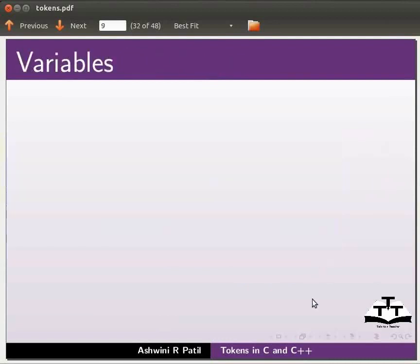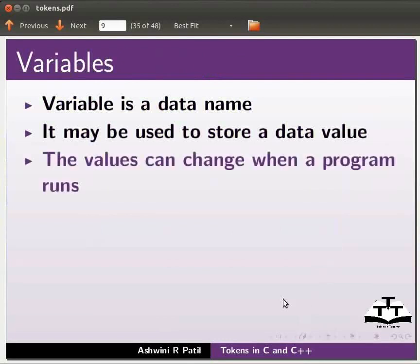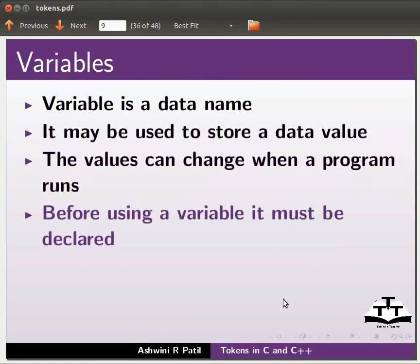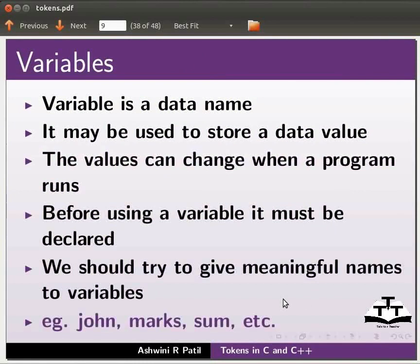Now we will move on to variables. Variable is a data name. It may be used to store a data value. The values can change when a program runs. Before using a variable, it must be declared. We should try to give meaningful names to variables. Examples: John, Marks, Sum, etc.